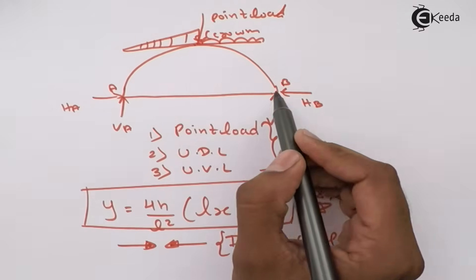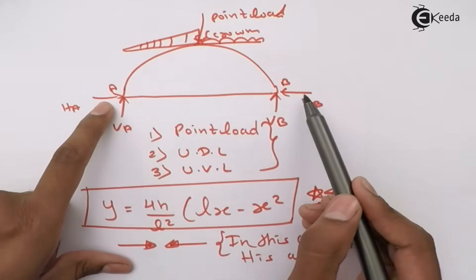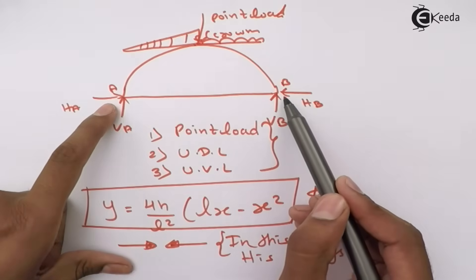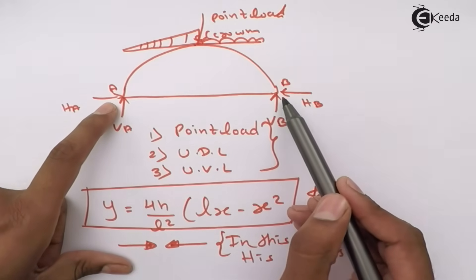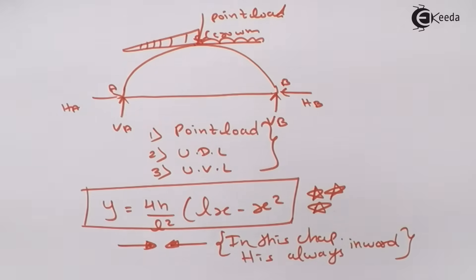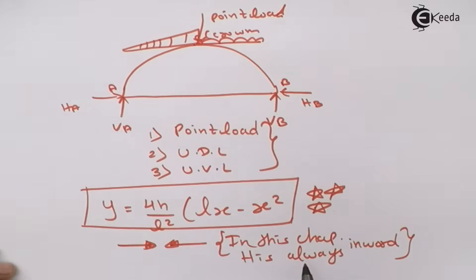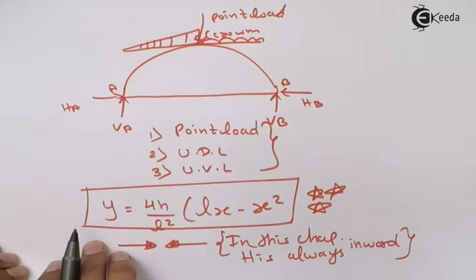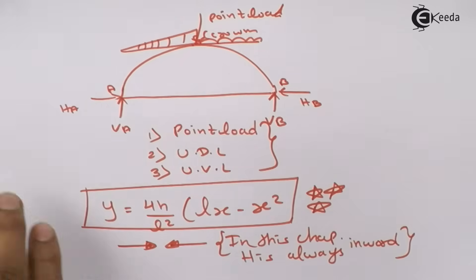In this chapter, H is always inward. HA and HB are always inward because loads come from above. The arch tries to spread outward, so to resist this spreading, H is applied inward in the same direction as the resistance. That is why H is always inward in this chapter.